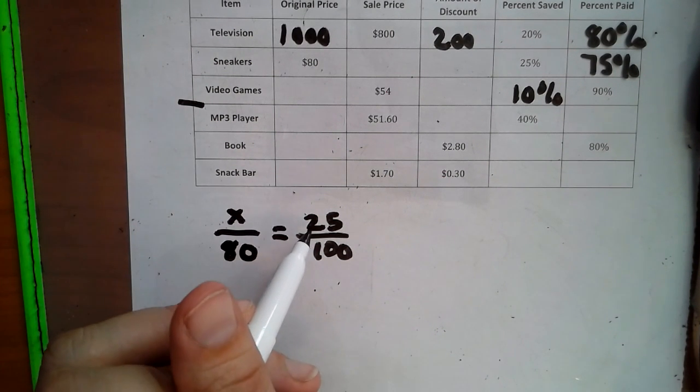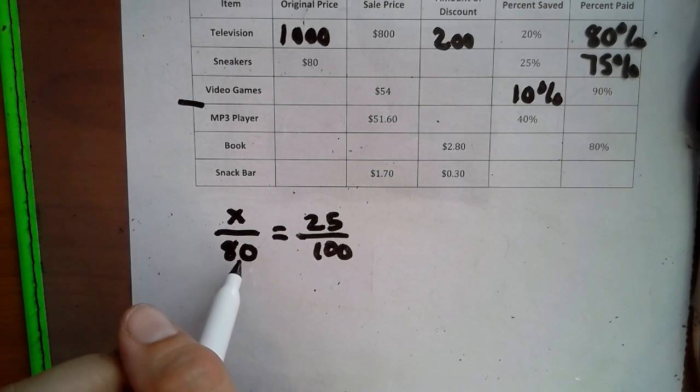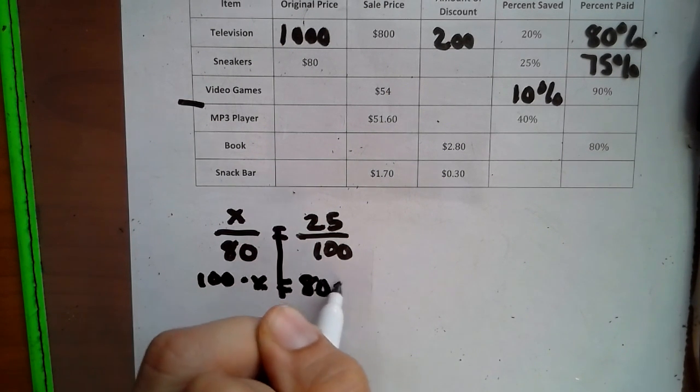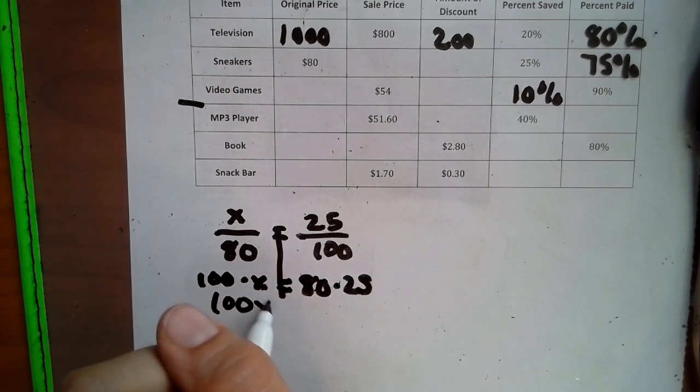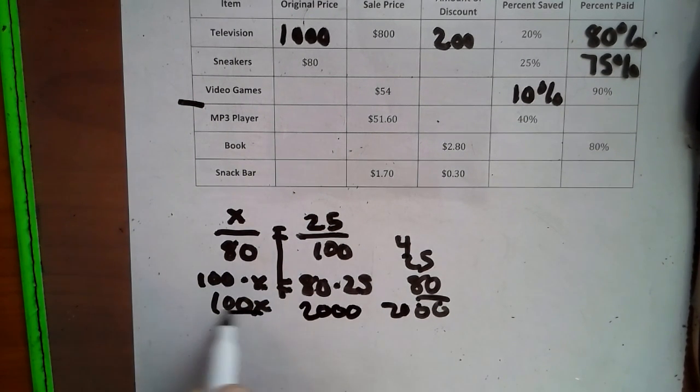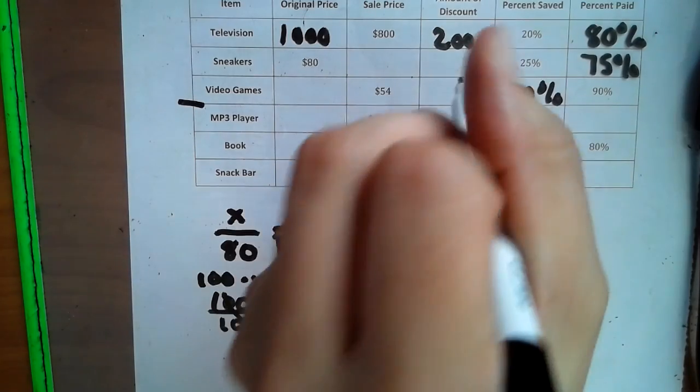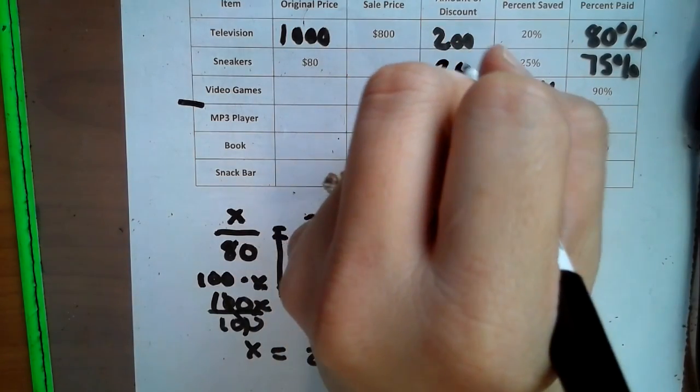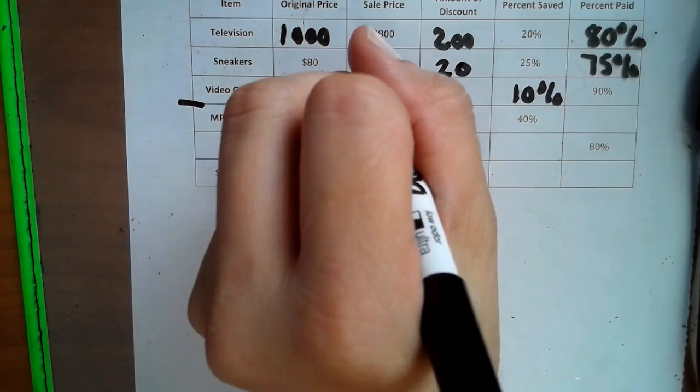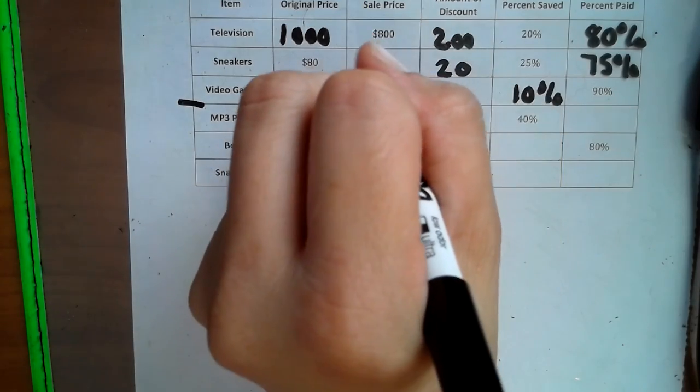So 25% is what we saved. That would be the discount. The original price is $80. So we can go 100 times X equals 80 times 25. 100X, 25 times 80 is 2,000 divide by 100, X equals 20. So 25%, our discount was $20. So if it was $80, and we get $20 off, our sale price is 80 minus 20, which is $60.